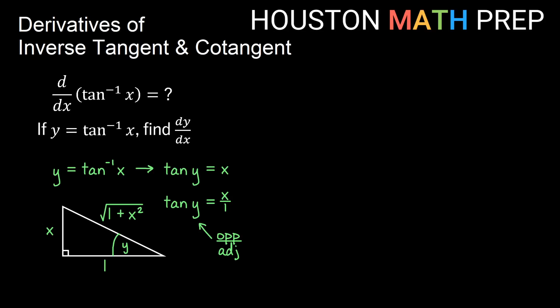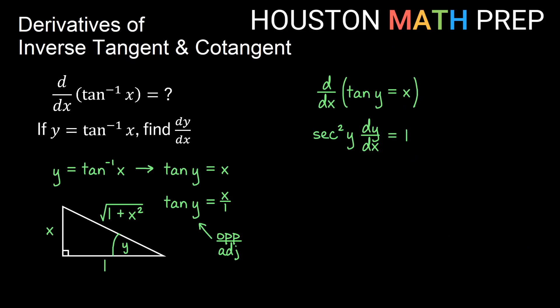Now let's move to the derivative part. Taking the derivative with respect to x of tangent y equals x, we do this implicitly. The derivative of tangent y gives secant squared y, and because y is also a function of x, the chain rule requires we multiply by dy/dx. The derivative of x on the right side is just 1. Dividing both sides by secant squared y, we get dy/dx equals 1 over secant squared y.